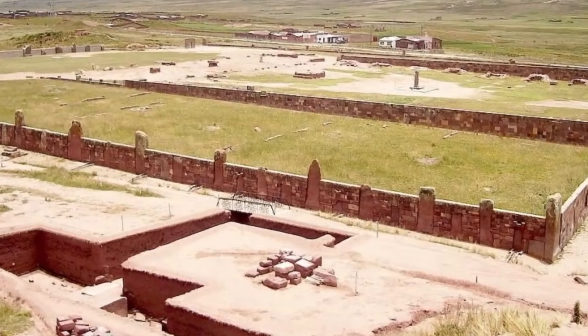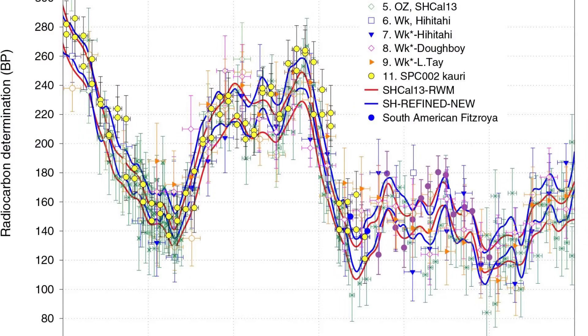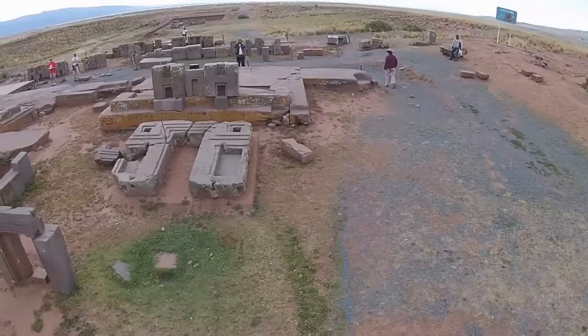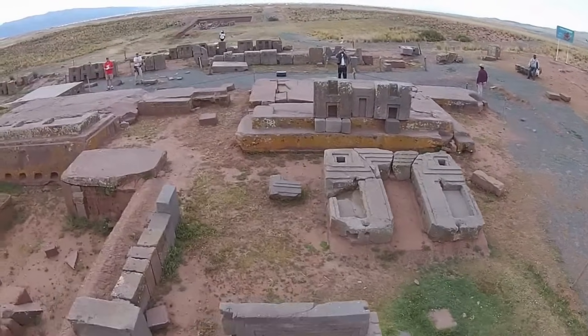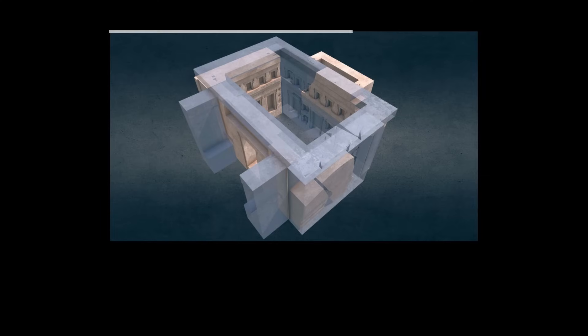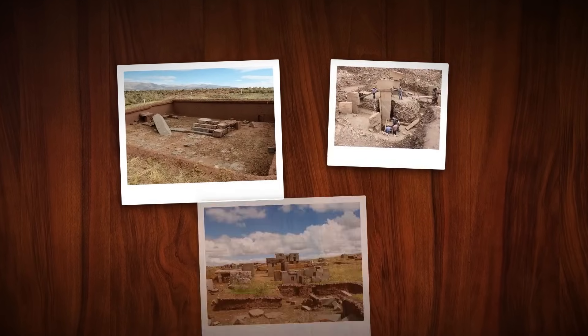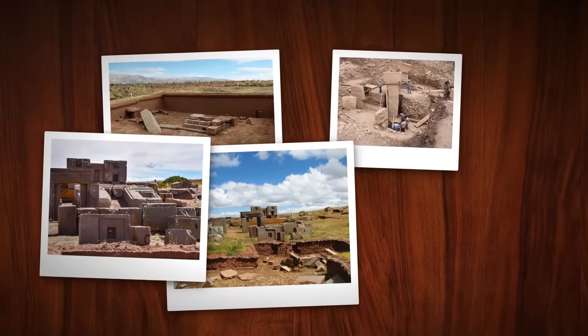Recent years have seen the chronology sharpen further. In 2023, a major data set of radiocarbon dates from the region allowed for high-precision modelling, tightening the confidence intervals around each construction phase. While the blocks above ground still resist absolute dating, the context beneath them leaves little doubt. By the late 6th century, Puma Punku was already taking shape as a ceremonial platform, its stones set atop carefully prepared earthworks.